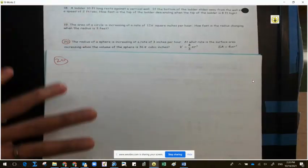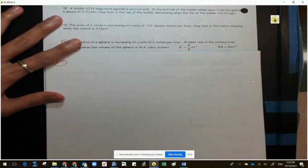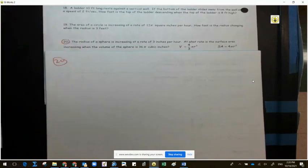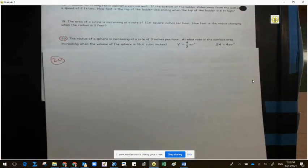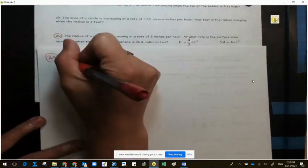Number 20, let's see. Colin, go ahead and read number 20 please. At a rate of three inches per hour, at what rate is the current area increasing in the volume of this sphere is 36 pi. So let's start by writing out F, W, G, E on the side.